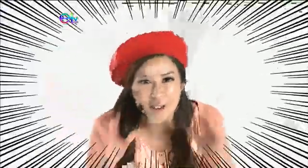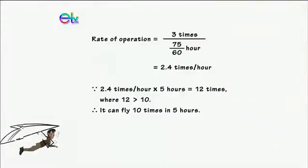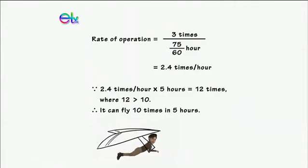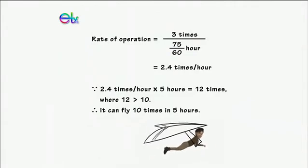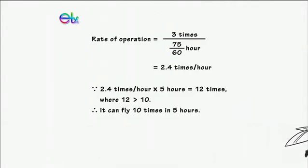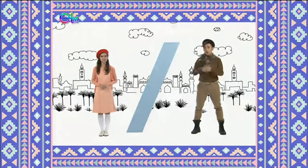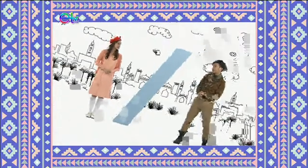If the rate of operation is maintained, can the glider fly 10 times in 5 hours? The rate of operation of the glider is 2.4 times per hour, so this glider flies 12 times in 5 hours. If we ignore other factors, this glider can definitely fly 10 times in 5 hours, and it could even fly more than needed.